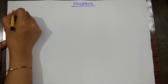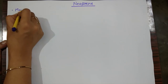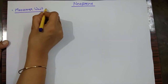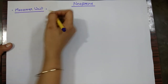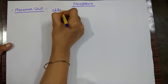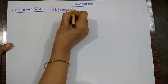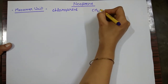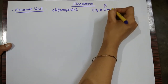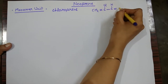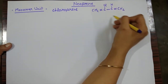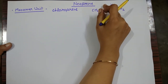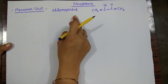First we have to know the monomer unit. The monomer unit of neoprene is chloroprene. The structure of chloroprene is CH2 double bond CCl single bond CH double bond CH2. So we have the 1,3-butadiene structure, where H is replaced by Cl to give chloroprene.